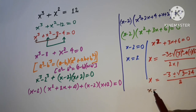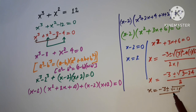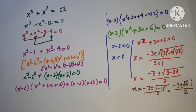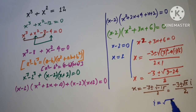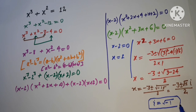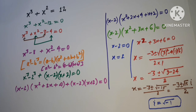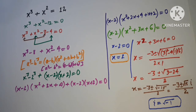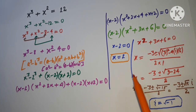Since the discriminant is negative, we write √(-15) = i√15, where i = √(-1). This is a complex number — there is no real solution from this factor. So the final answers are x = 2, and x = (-3 ± i√15) / 2.